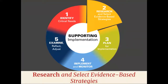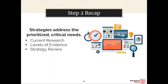Step two is to research and select evidence-based strategies. When you consider evidence-based strategies, you need to select strategies that address the prioritized critical needs from step one. Considerations include current research, ESSA's levels of evidence, and strategy review. All levels of the organization—the DLT, BLT, or CSLT, and TBTs—play crucial roles in researching and selecting evidence-based strategies.